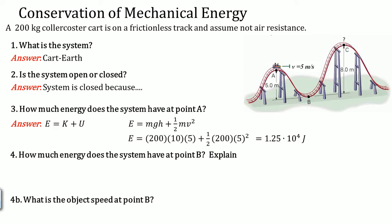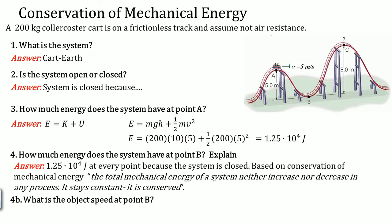How much energy does the system have at point B? You don't have to calculate anything. You know it's going to be 1.25 × 10⁴ joules at any point because the system is closed. Based on the conservation of mechanical energy, the total mechanical energy of a system neither increases nor decreases in any process — it stays constant. It is conserved.